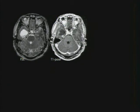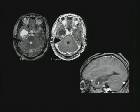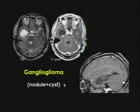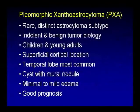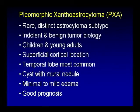Here is an example of a temporal lobe nodule and cyst — this is ganglioglioma. Here is another nodule and cyst with virtually no edema — this is pleomorphic xanthoastrocytoma. PXA is also WHO grade 1, generally biologically indolent, but there is an anaplastic variant that can behave more aggressively.